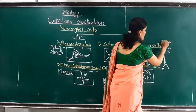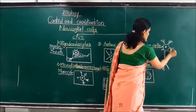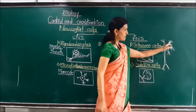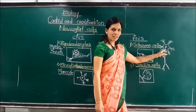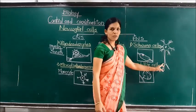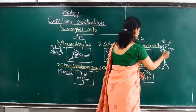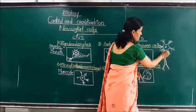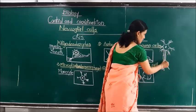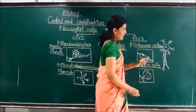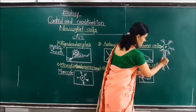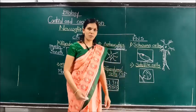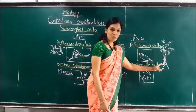Looking at the structure of the nerve fiber: it has dendrites, a cell body called the cytone, and an axon. On this axon, the myelin sheath is present. This myelin sheath is secreted by Schwann cells, which are present along the axon. The nucleus of the Schwann cell is visible in the diagram. Their function is to form the myelin sheath around the nerve fiber.